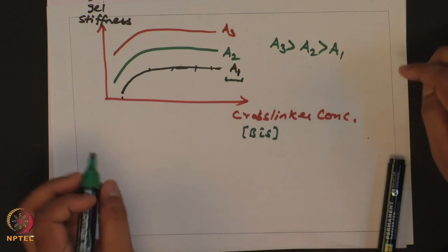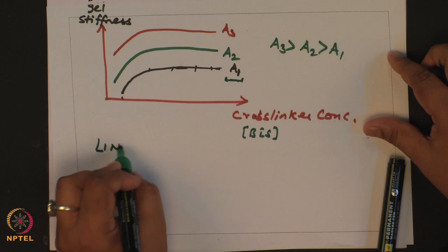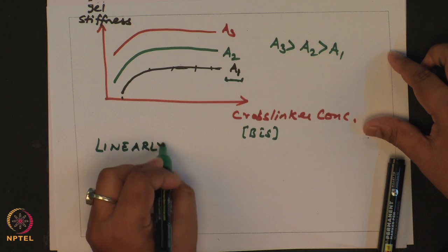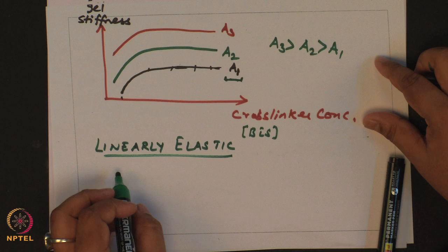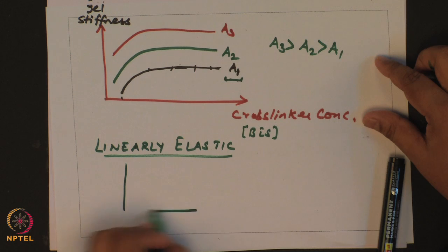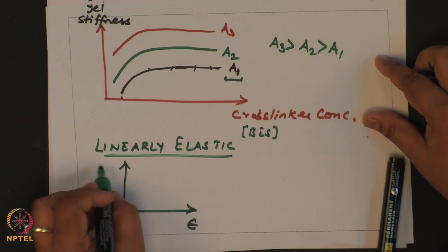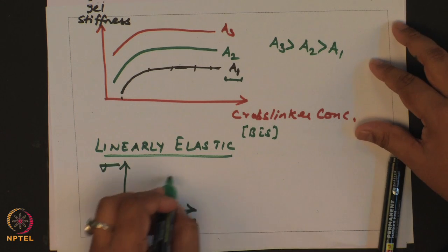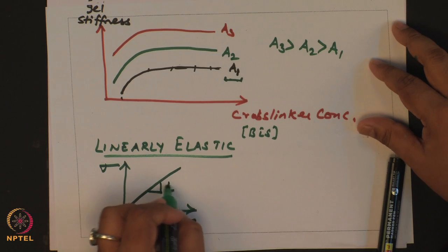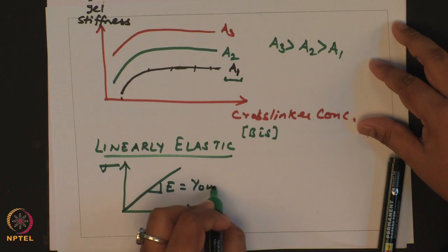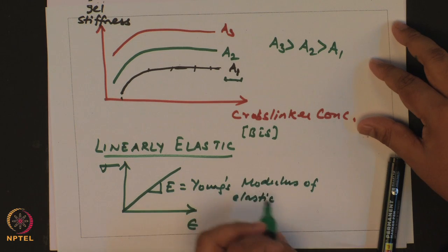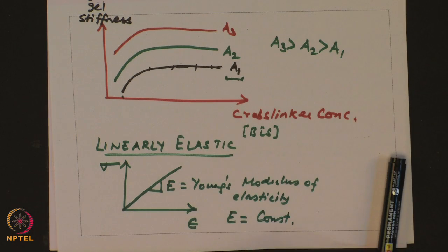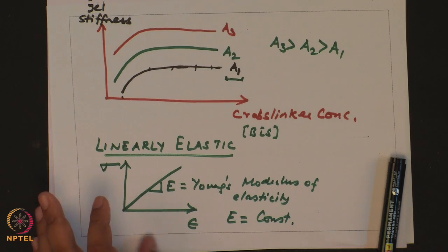The beauty of acrylamide gels is that it has been found that the PA gels are linearly elastic. What is the meaning of linearly elastic? If you exert a given amount of strain and measure the stress, this is a straight line with the slope being E. E is the Young's modulus of elasticity. For linearly elastic materials E is constant.